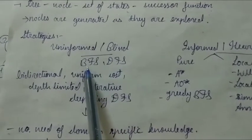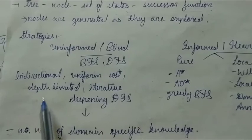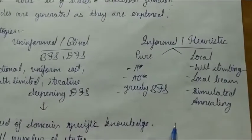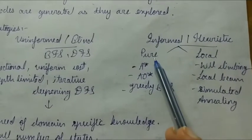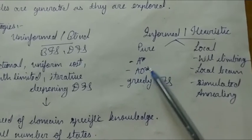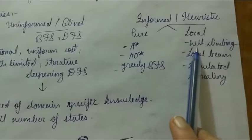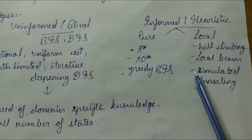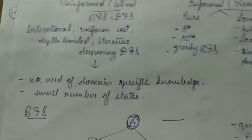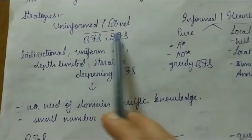Blind search includes BFS, DFS, bi-directional, uniform cost, depth-limited, and iterative deepening. For the heuristic approach, there are two types: pure heuristic and local algorithms. Pure heuristic includes A-star, AO-star, and greedy BFS. Local search includes hill climbing and its two variants. Now let's move on to strategy one: uninformed or blind search.